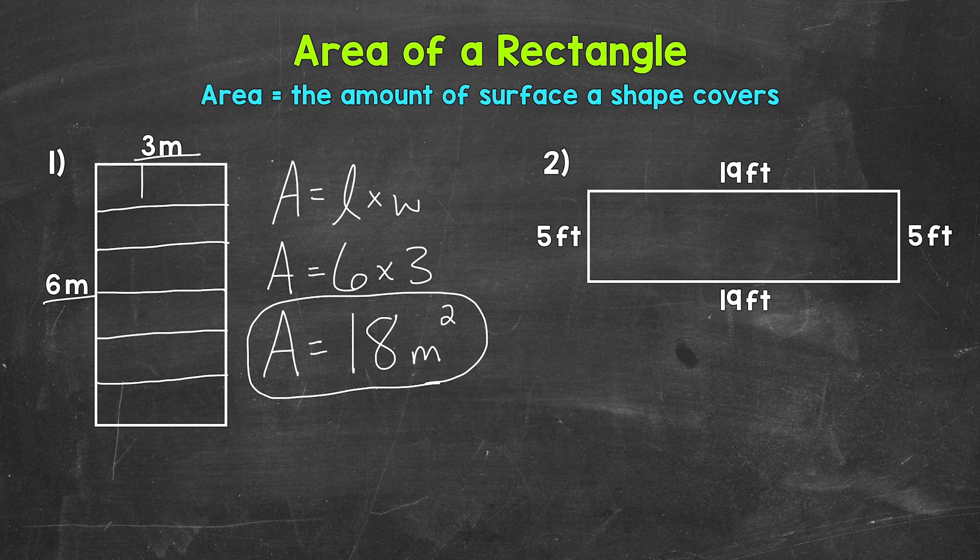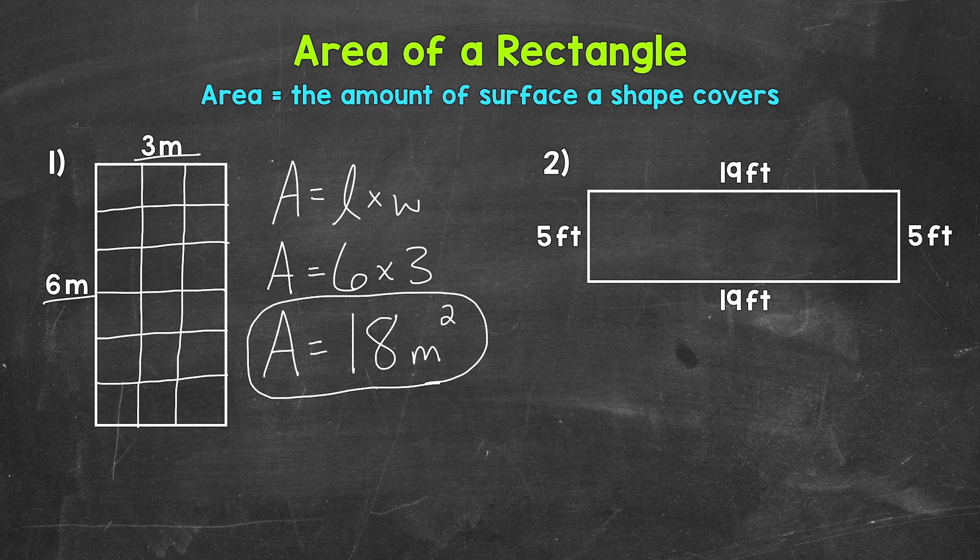And now we can do the width, so 3 meters: 1, 2, and 3. You'll notice that we have squares now. These are square units. And specifically for number 1, those are square meters.